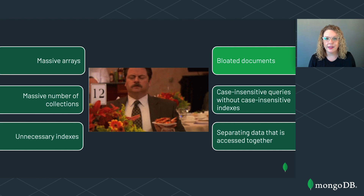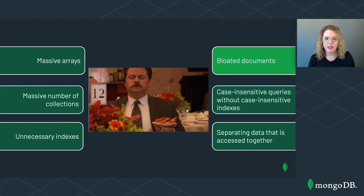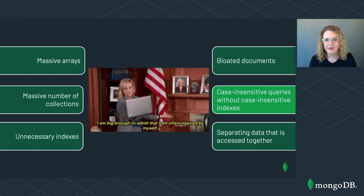Fourth: bloated documents. This anti-pattern refers to storing large amounts of data together in a document when that data is not frequently accessed together. We continued discussing Leslie's website for inspirational women, restructuring the data to optimize the homepage query and fit the most important data in RAM. Data that is accessed together should be stored together — just don't bloat your documents with related data that isn't actually accessed together. Fifth: case insensitive queries without case insensitive indexes. This refers to frequently executing a case insensitive query without a case insensitive index to cover it. We created case insensitive indexes so we could return all the Harriets in the collection regardless of capitalization.